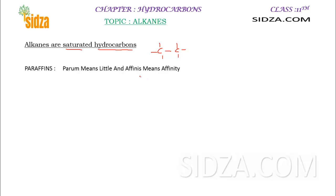Alkanes are also called paraffins. This term paraffin is derived from the Latin words 'param' and 'affinis'. 'Param' meaning little and 'affinis' meaning affinity, which means that these are molecules with very little reactivity or very little affinity.